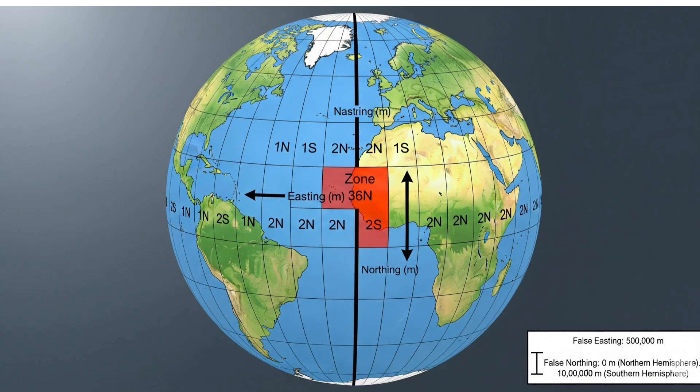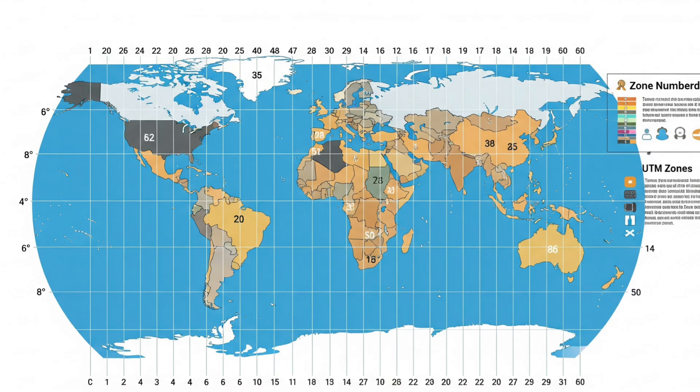The globe is split into 60 UTM zones from west to east, starting at longitude 180 degrees west. Each zone spans 6 degrees of longitude. For example, Zone 33N covers parts of Italy and Ethiopia.